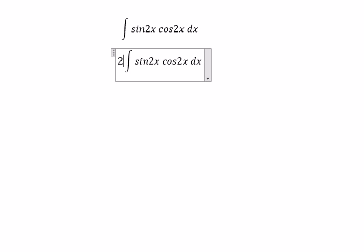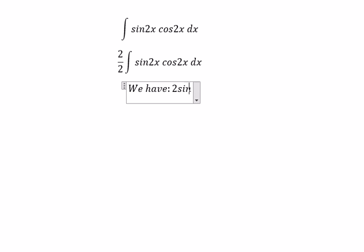We need to have 2 over 2. Next, we have 2 sin 2x cos 2x equal to sin 4x. We will use this formula in here.